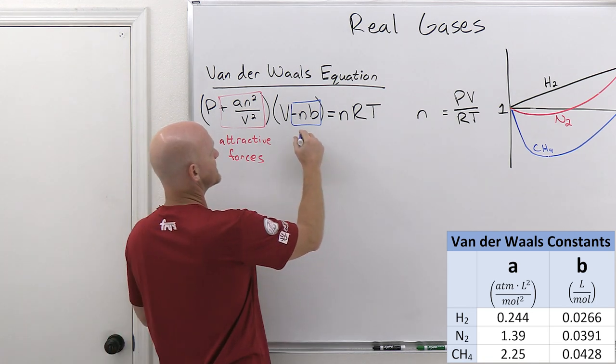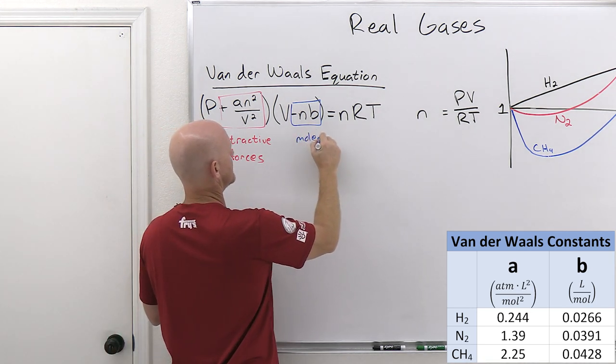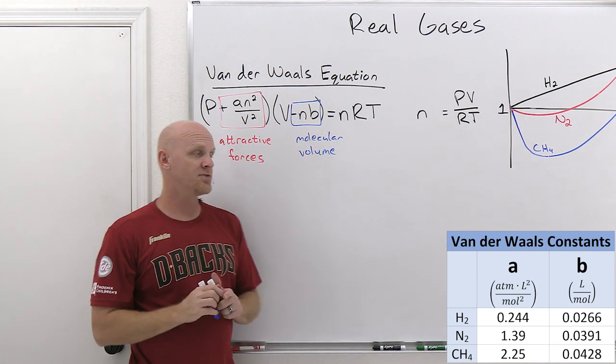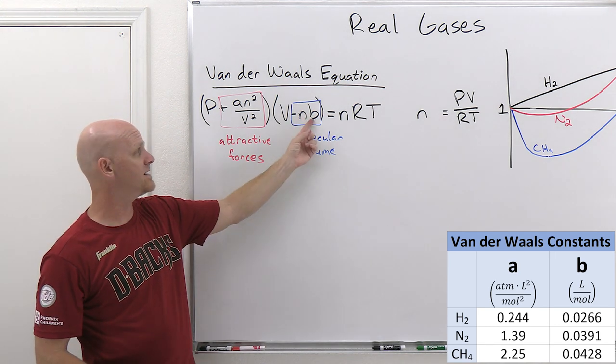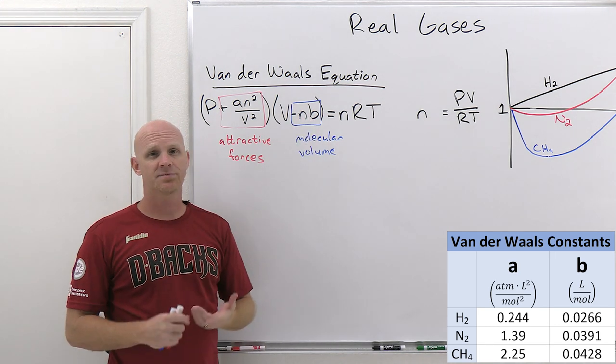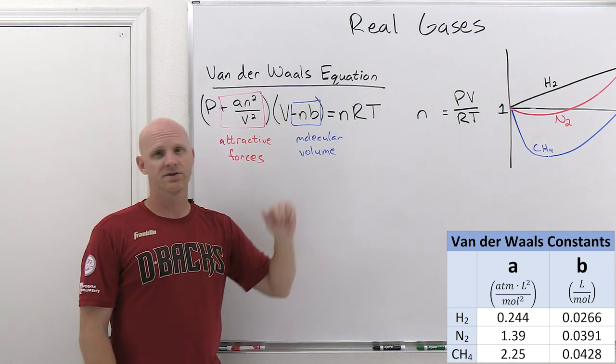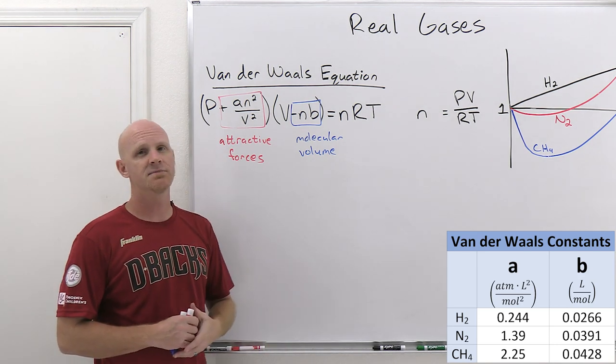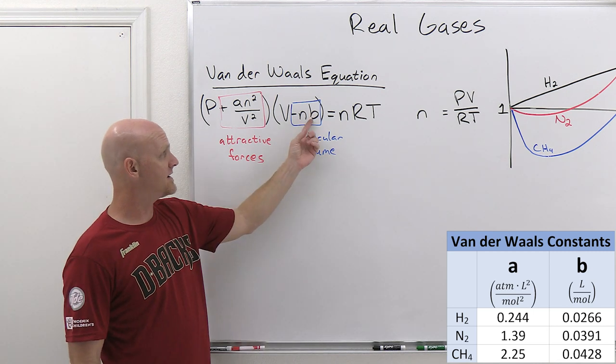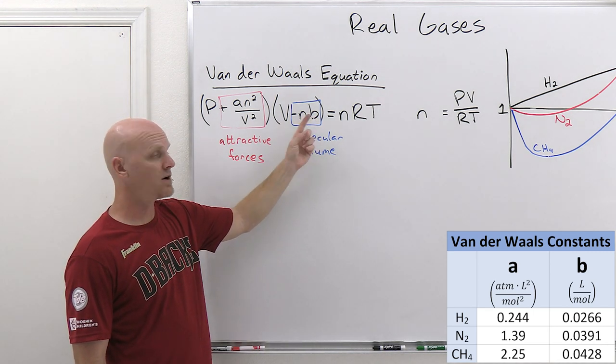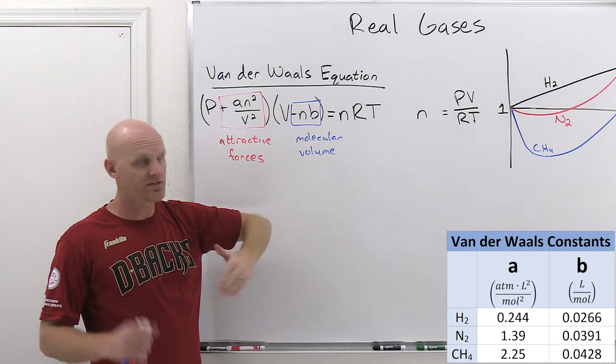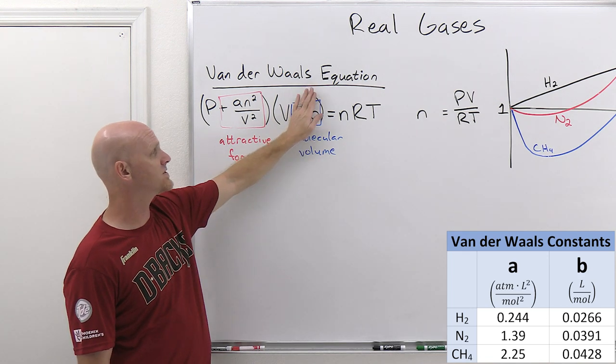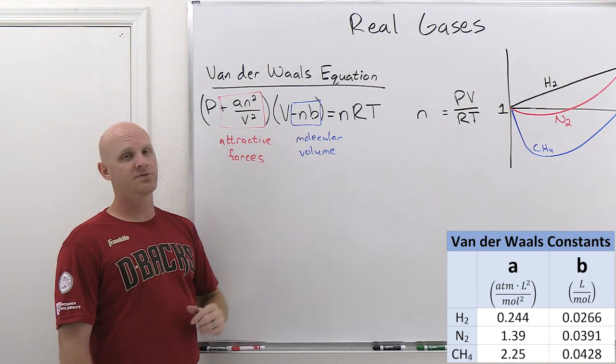The second term here is going to account for the molecular volume—the fact that the molecules really do take up some volume and we're going to try and account for it. B here is the other Van der Waals constant. For each gas, they typically have these two Van der Waals constants, A and B, and you'll find them in tables for different gases. They've determined what they are empirically by just doing some measurements in the laboratory. Same thing here again, the closer this is to zero, if B equals zero for a particular gas, which it doesn't, but the closer it is to zero, the closer you have an ideal gas, because if it did equal zero, this term would go away and you'd have no molecular volume essentially.